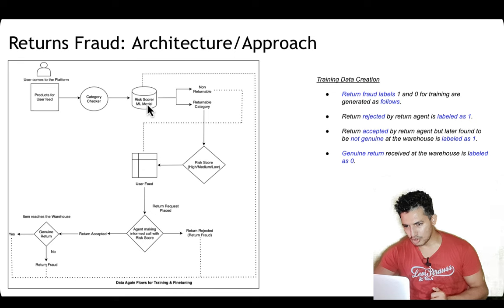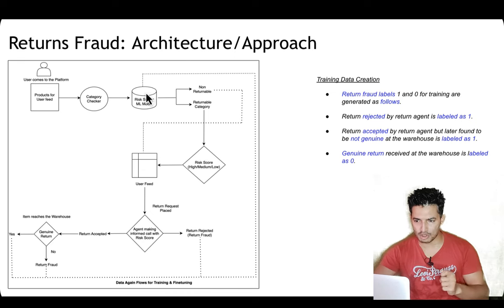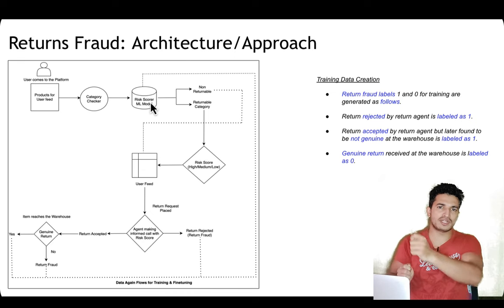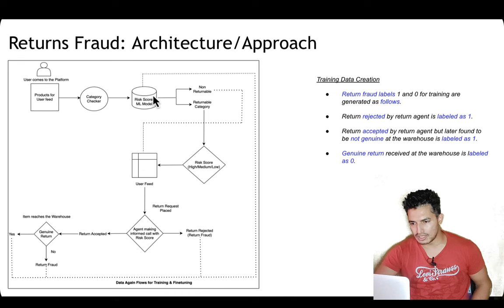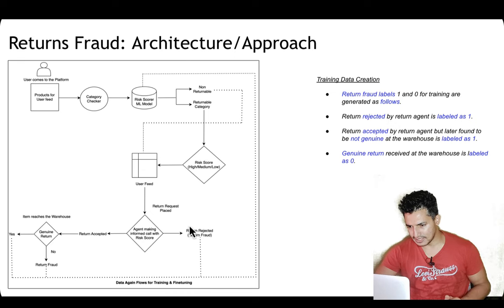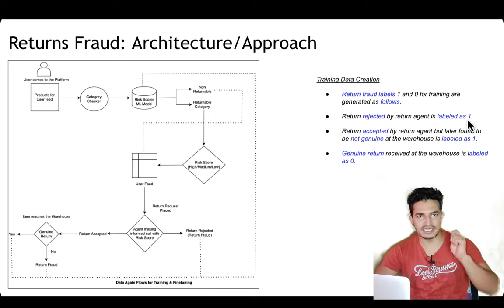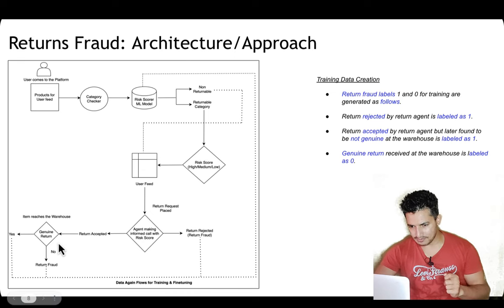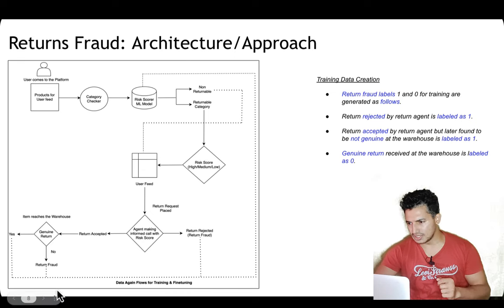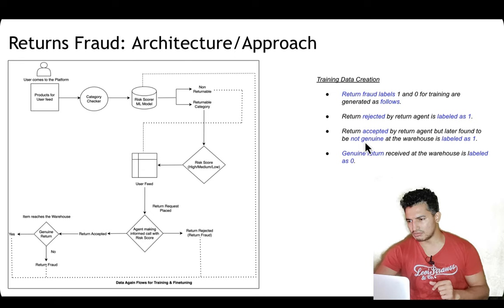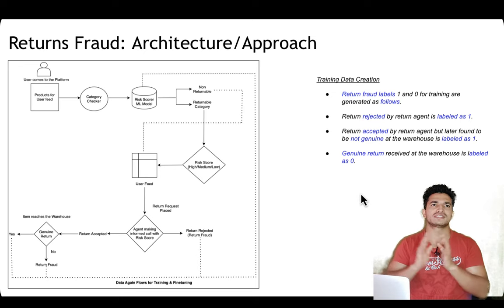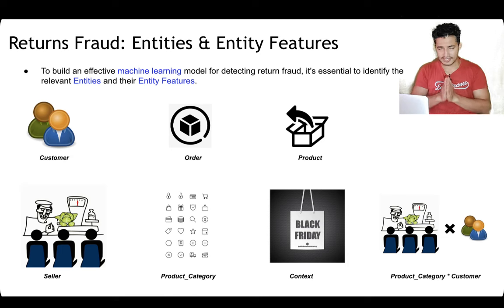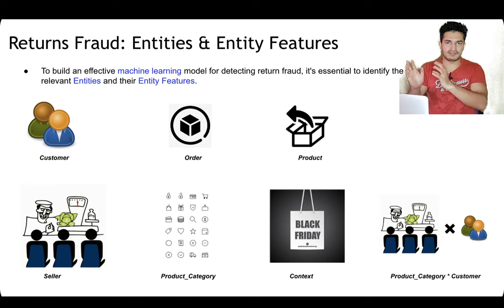To train the risk score model, we need labels. Return fraud labels (1 and 0) are generated as follows: returns rejected directly by the return agent are labeled 1 (fraud); returns accepted but later found to be non-genuine at the warehouse are also labeled 1; genuine returns that reach the warehouse correctly are labeled 0. Since return frauds may be few compared to genuine returns, we can apply sampling techniques to balance the classes during model training.